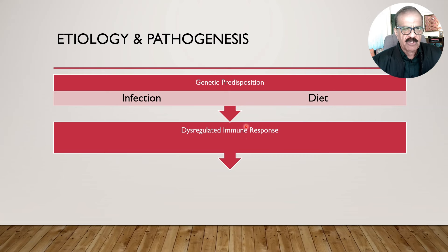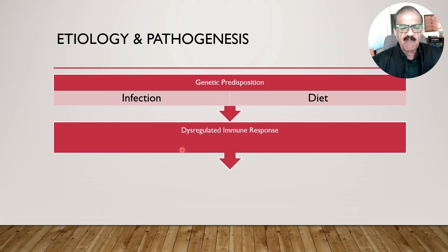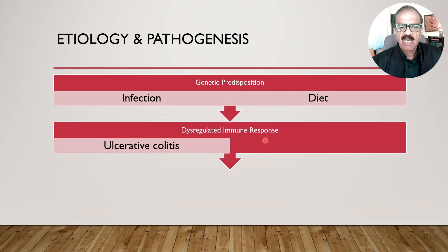In a normal person, if there is some infection, there is a very organized immune response specifically targeted against that pathogen, which helps to clear the infection. But in patients with genetic predisposition to inflammatory bowel disease, this infection sometimes leads to a dysregulated immune response. That dysregulated response causes inflammation in the gut — first simple inflammation, and if it persists, it can lead to ulceration.